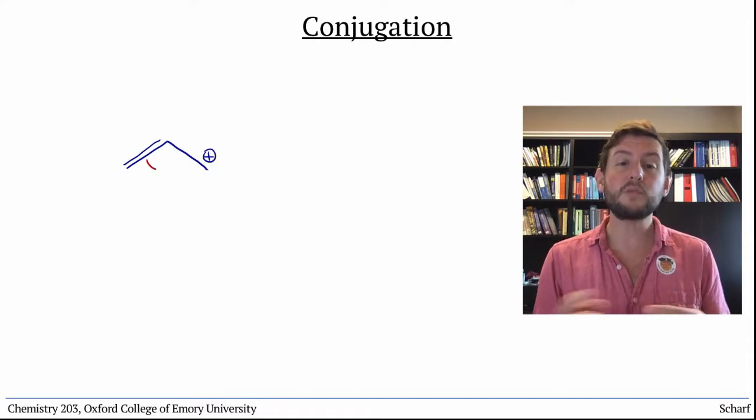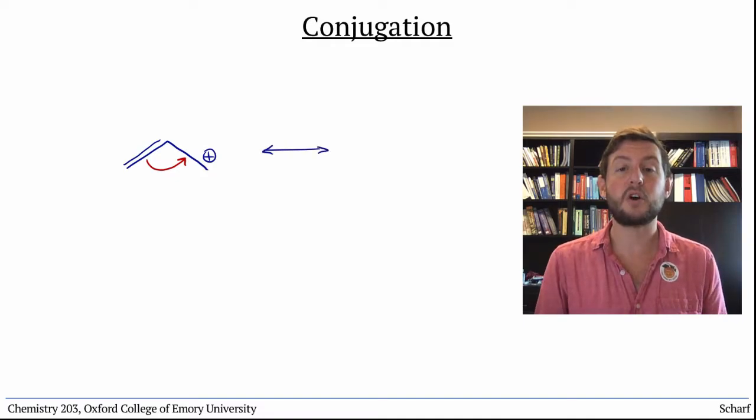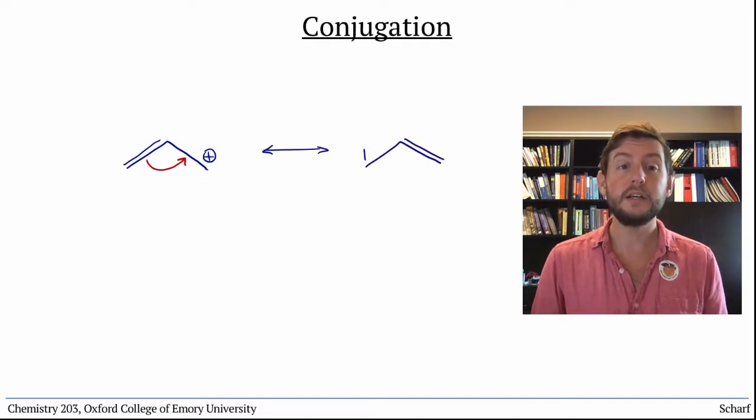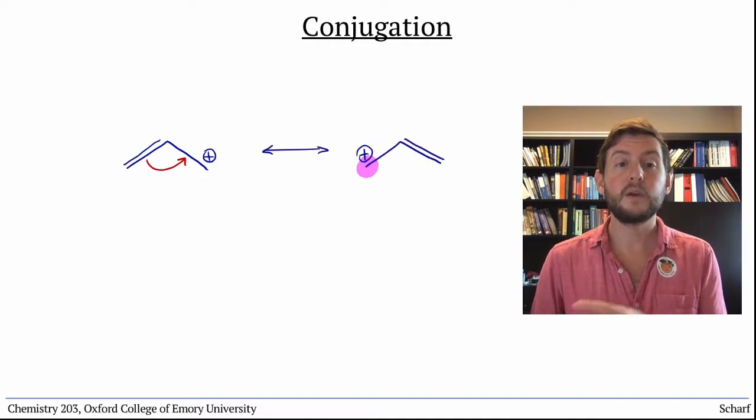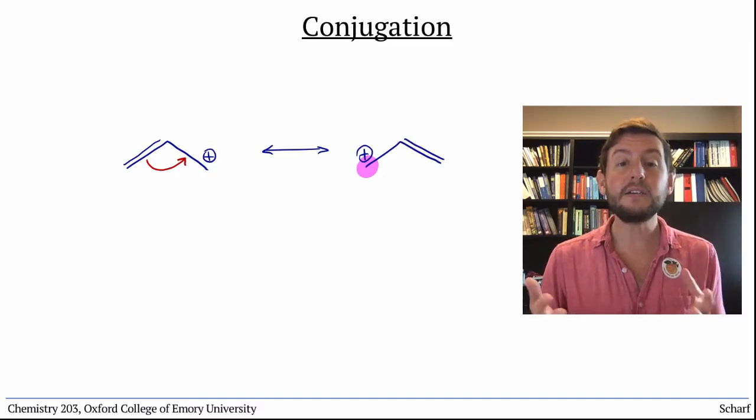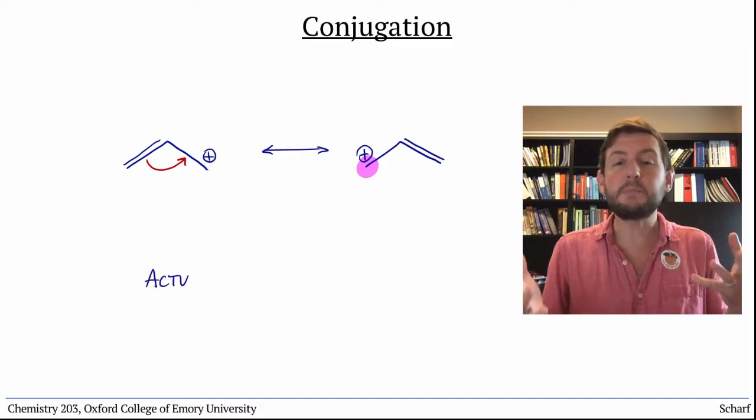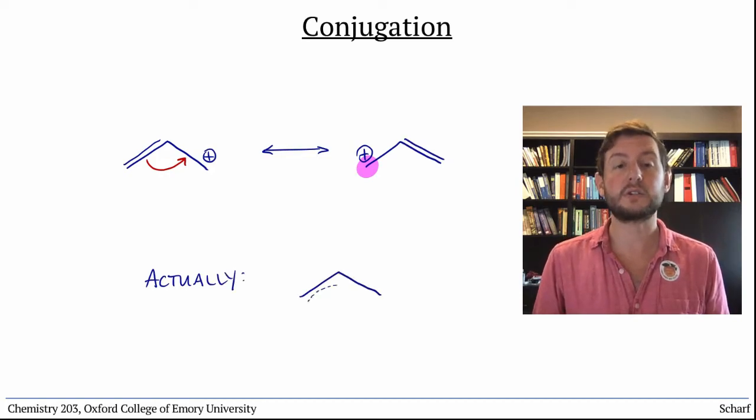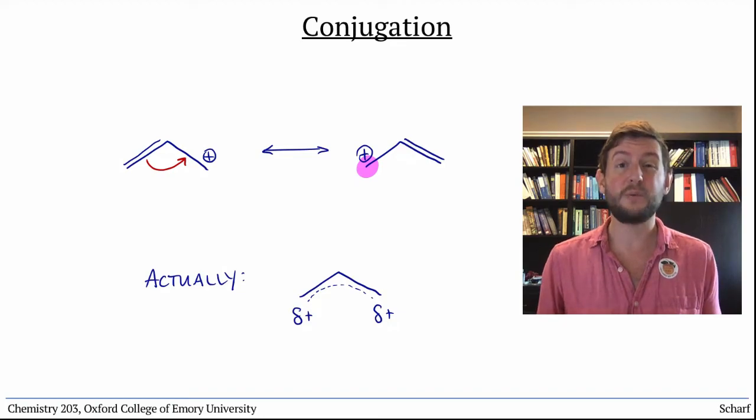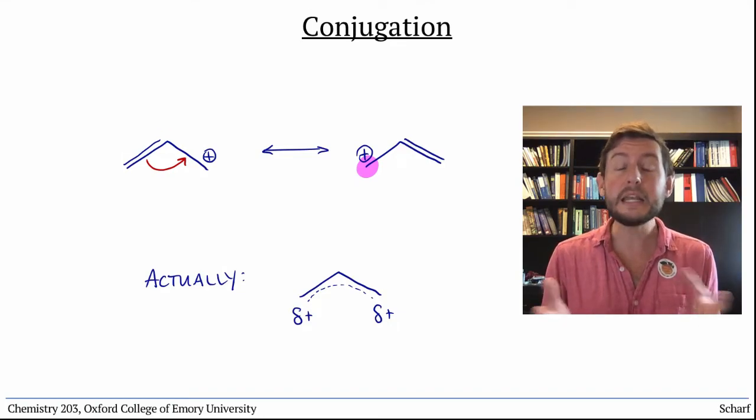We can draw a resonance structure where the positive charge and the empty p-orbital is over here. Both drawings are accurate, and the allyl cation is a hybrid between the two resonance structures. But how do we look at this from the perspective of molecular orbital theory? How do we explain this extra stability?